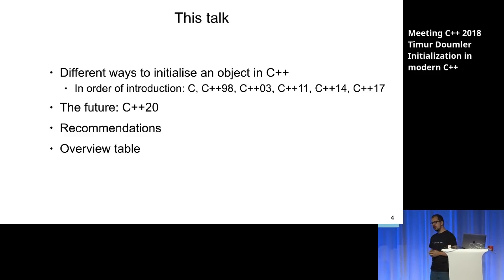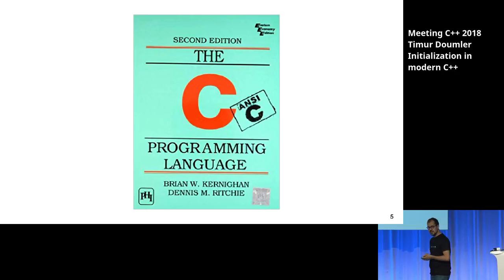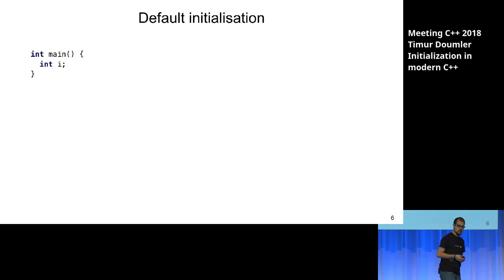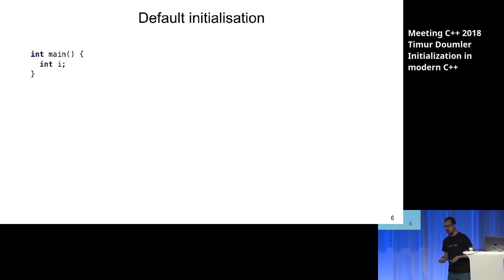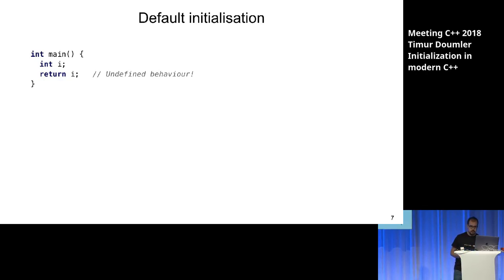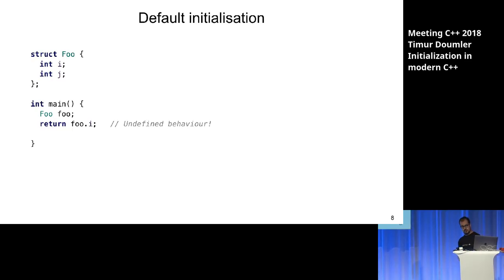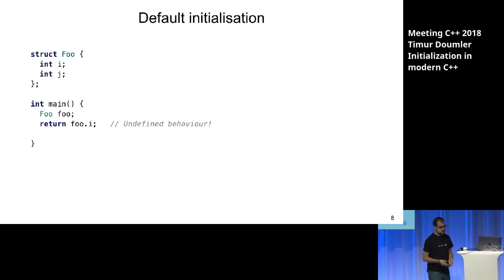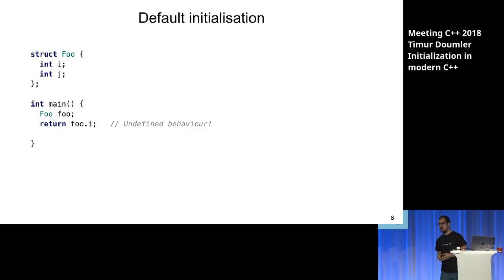Let's start with what we inherited from C. How can you initialize a variable in C? The first thing is what we call default initialization in C++, which means you just don't give any initializer at all. In this case the integer stores an indeterminate value, and accessing that value is undefined behavior. The same happens if you have a struct — you can create an instance without an initializer and the members will also be uninitialized, causing undefined behavior. I'm sure this is not new to most of you.